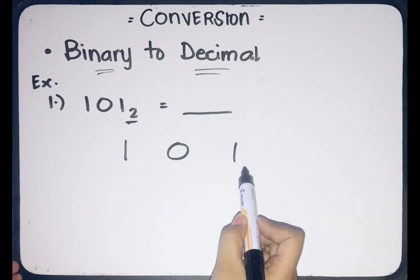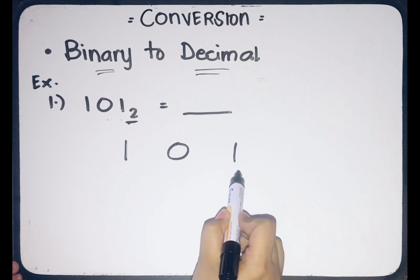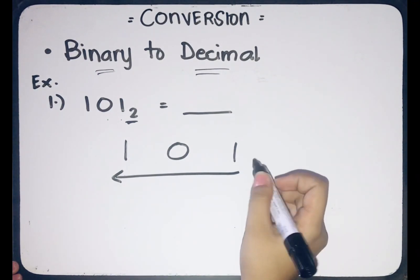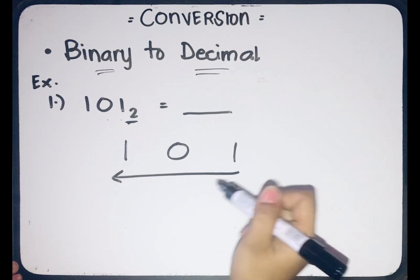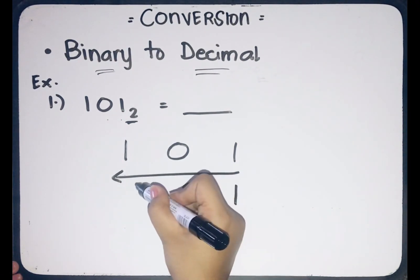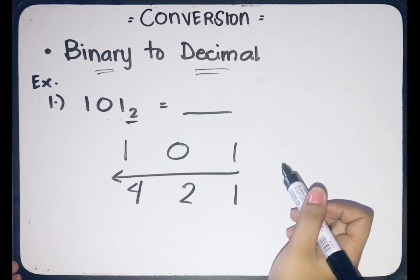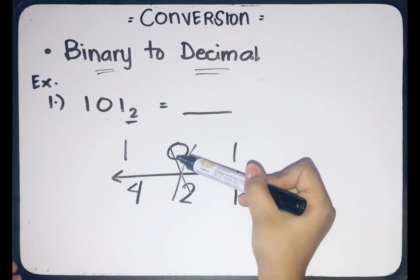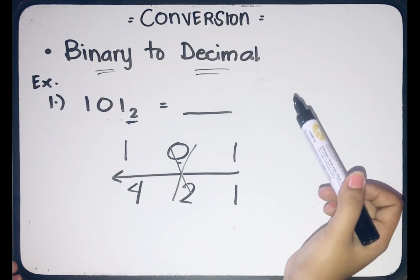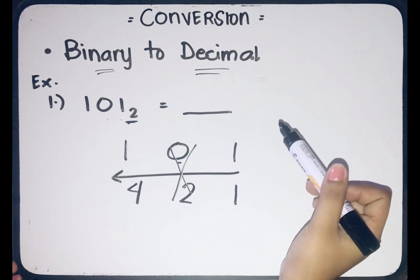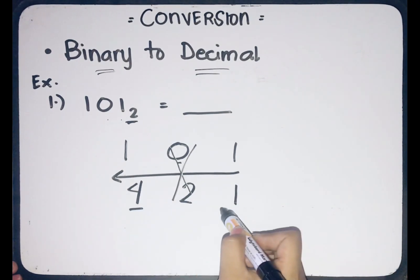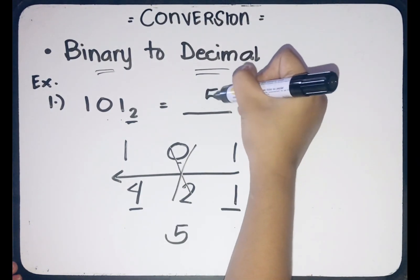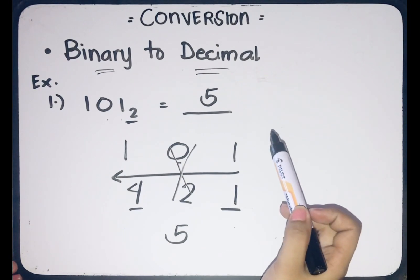Since we are in the whole number portion with no decimal point, we start with 1, then multiply by 2 going left: so we have 1, 2, 4. Then we disregard the place value whose corresponding binary digit is 0. We add the remaining place values, which are 4 and 1. Adding 4 and 1 gives 5. So 5 is the decimal equivalent of binary 101.